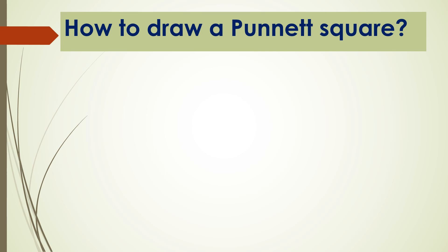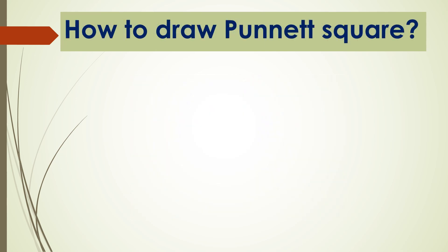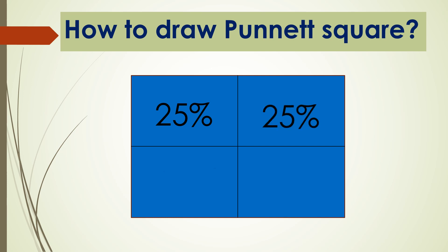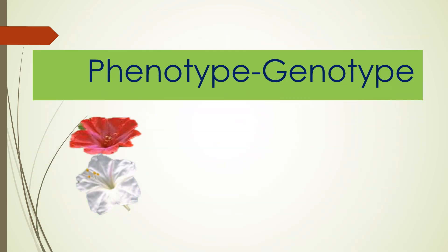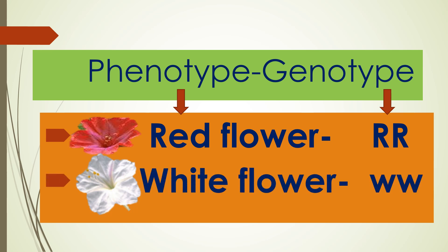How to draw a Punnett square. The Punnett square is divided into 4 parts, and each cell has 25%, for a total of 100%. Phenotype: red flower, with genotype RR — two capital letters. Phenotype: white flower, with genotype ww — two lowercase letters.